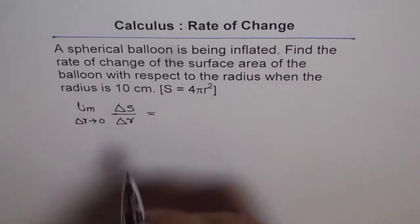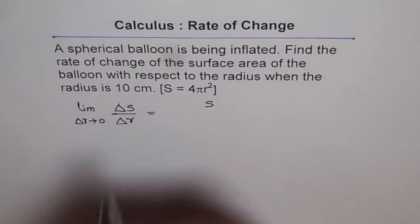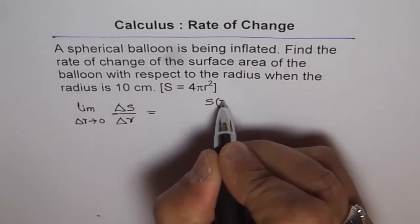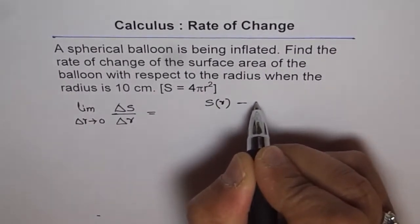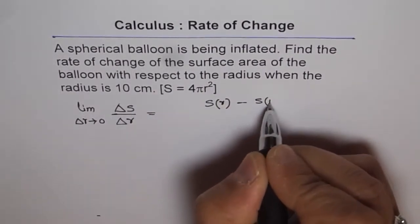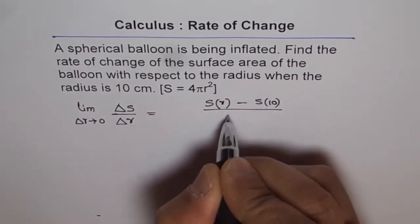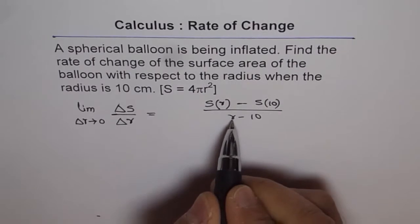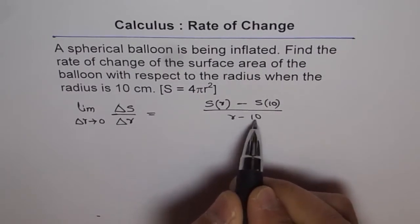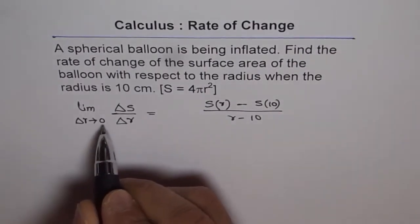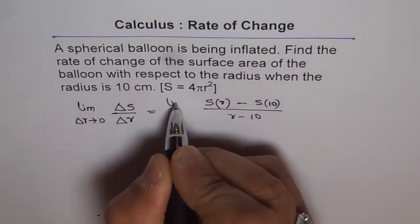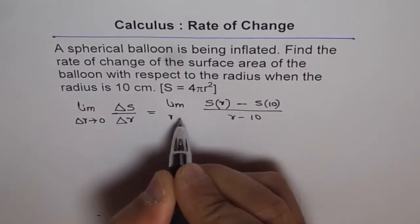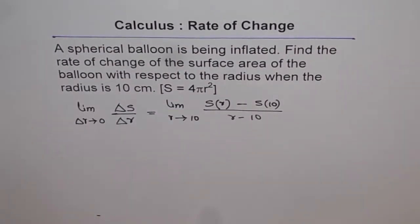In that case, we can write the change in surface area for a value r minus change over when r is 10 divided by r minus 10. So that is the average. But if this value of r approaches 10, then delta r will approach 0. So we can write this as where limit r approaches 10.